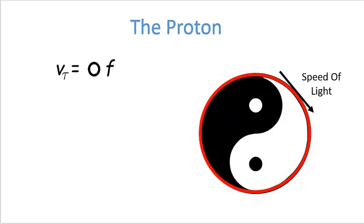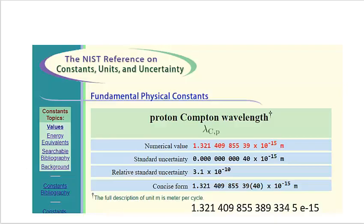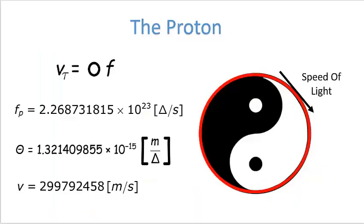Now I'm going to do the proton using the same equation. I use the Compton frequency — the mass of the proton divided by the quantum of mass from my specification — giving on the order of 10 to the 23 cycles per second. When you plug that into this equation along with the proton Compton wavelength from the international standard, 1.21409 times 10 to the minus 15 meters, you also get the speed of light.